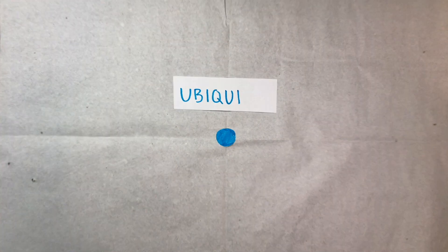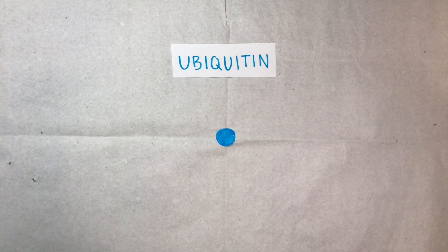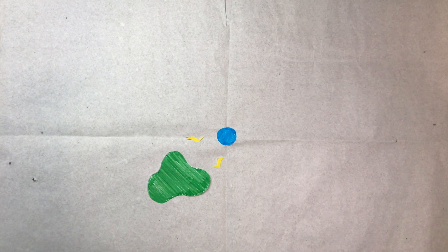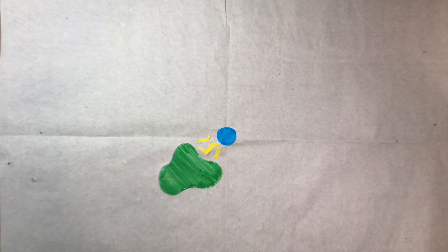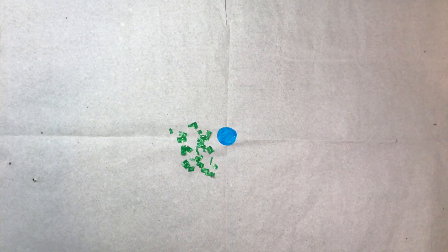This is ubiquitin. Ubiquitin is a small protein that can be attached to molecules via covalent bonds. Molecules marked by ubiquitin are soon broken apart.